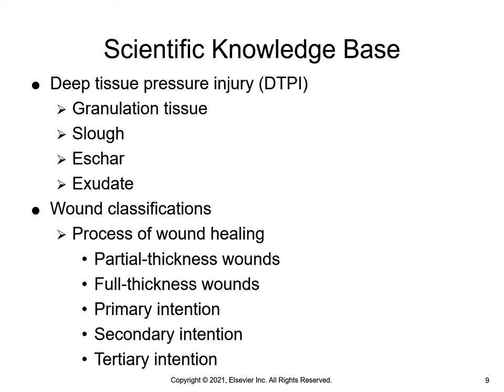An unstageable pressure injury involves full thickness skin and tissue loss where the extent of damage cannot be confirmed because it is obscured by slough or eschar. If the slough or eschar is removed, a stage three or stage four pressure injury will be revealed. Stable eschar — dry, adherent, intact, without erythema — on a heel or ischemic limb should not be softened or removed.